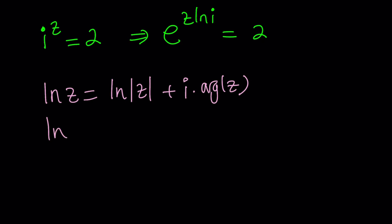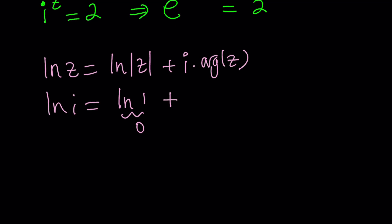So we can go ahead and evaluate ln i this way. Since the modulus or absolute value of i is 1, it's just going to be ln 1. And by the way, ln 1 is 0 in the real world, of course. And then in the complex world, it's definitely a different thing.